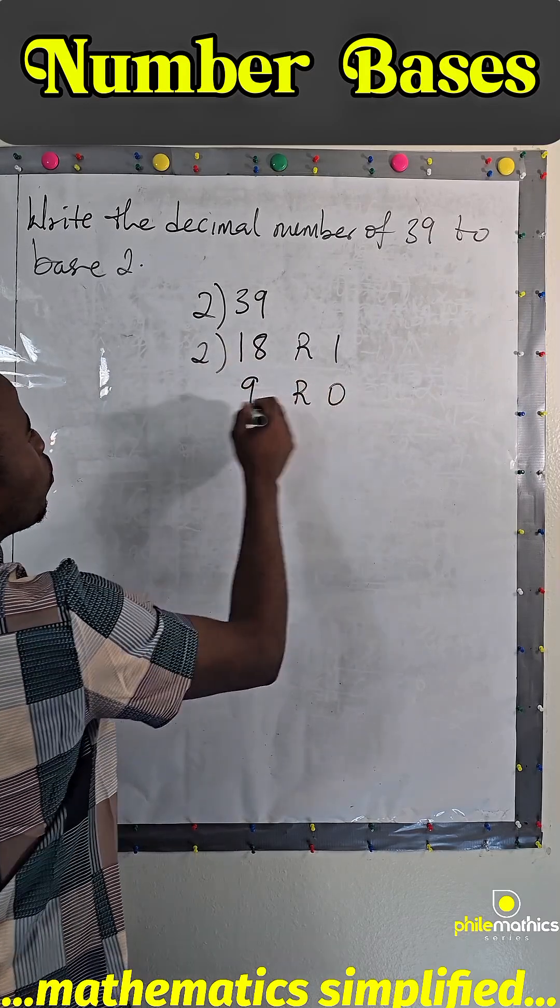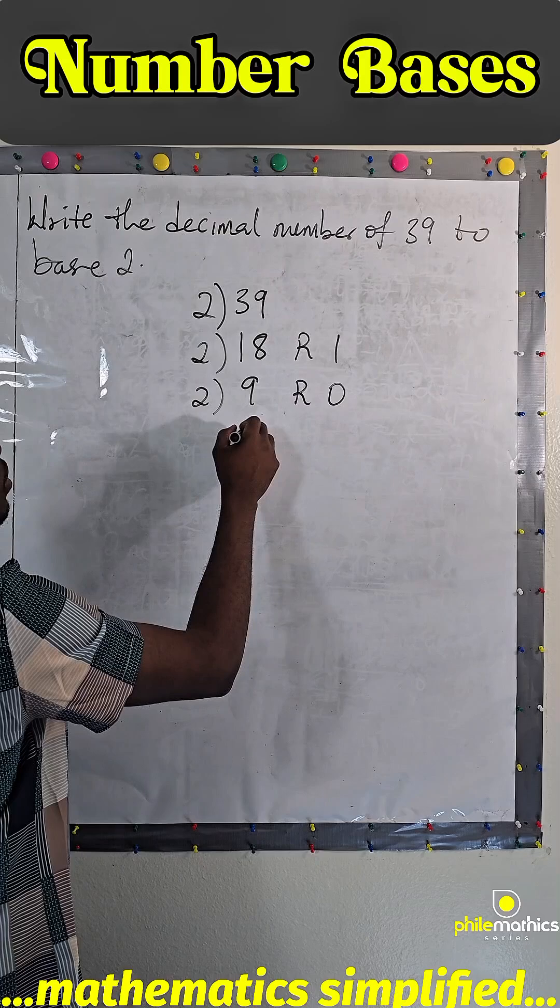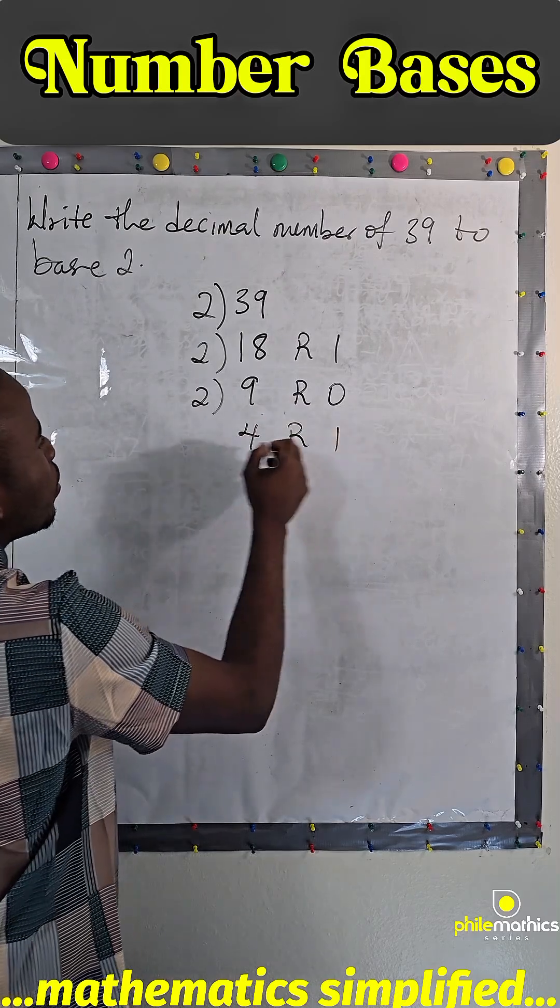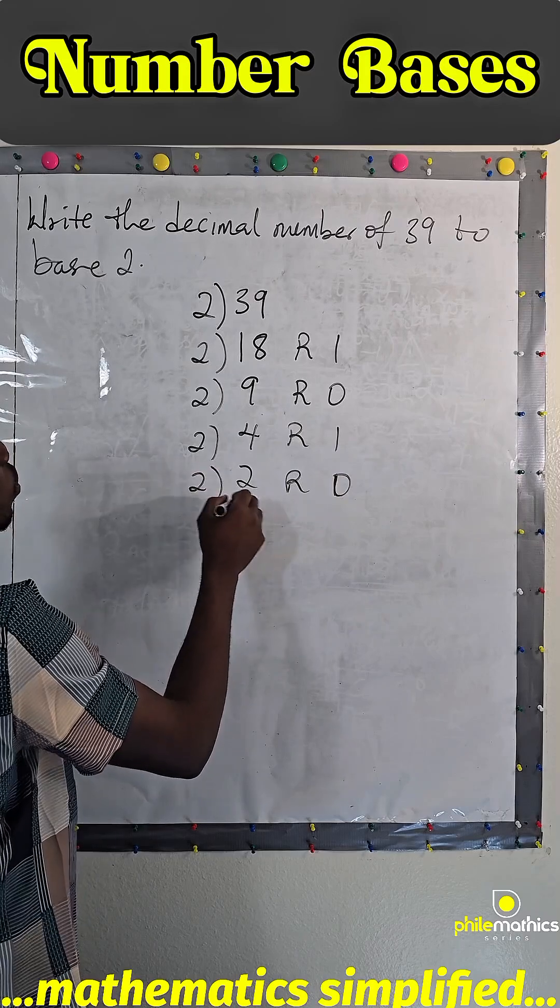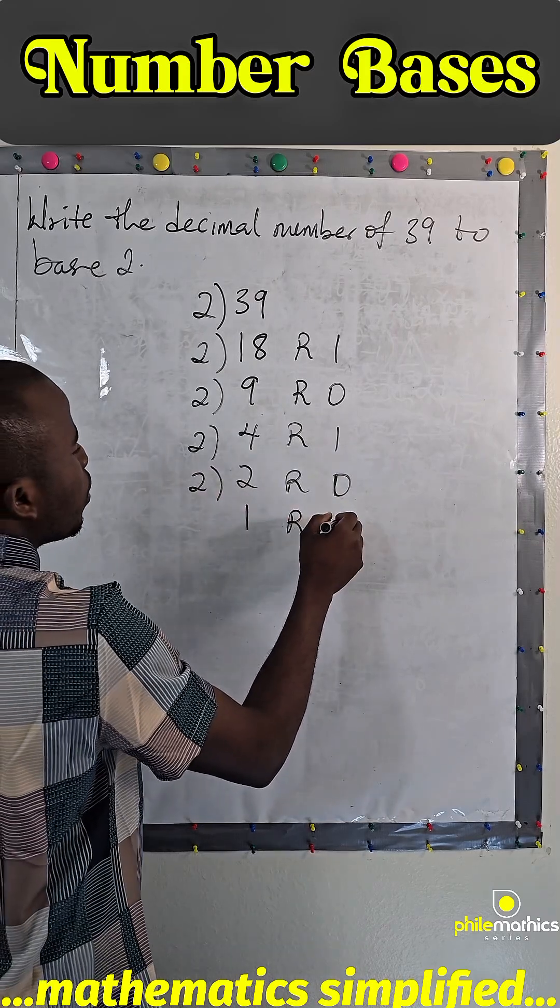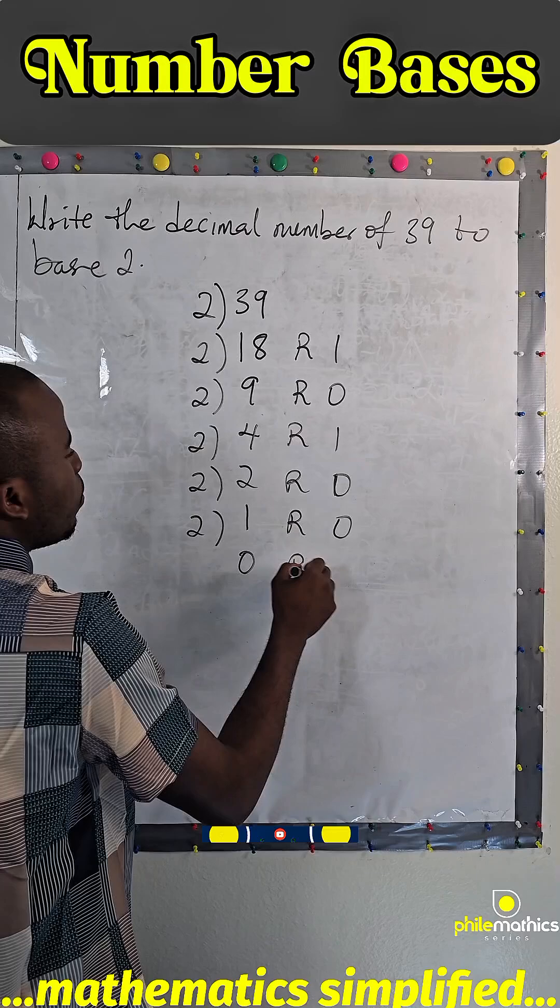2 into 9 is 4 remainder 1, 2 into 4 is 2 remainder 0, 2 into 2 is 1 remainder 0, 2 into 1 is 0 remainder 1.